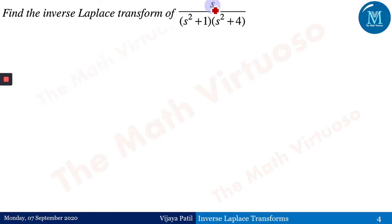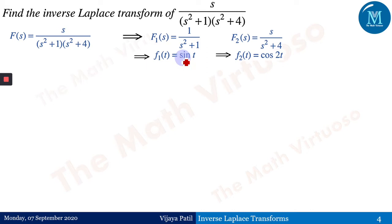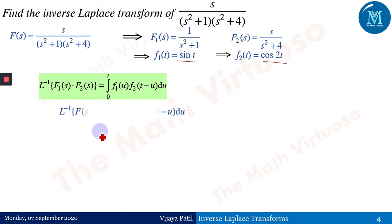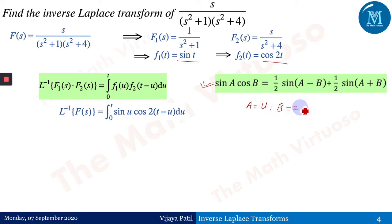Find the inverse Laplace transform of s/[(s²+1)(s²+4)]. Here f1(s) = 1/(s²+1) with inverse sin(t), and f2(s) = s/(s²+4) with inverse cos(2t). The convolution formula gives ∫₀ᵗ sin(u)·cos(2(t−u)) du. We apply the identity sin(A)·cos(B) = ½sin(A−B) + ½sin(A+B), where A = u and B = 2(t−u) = 2t−2u.